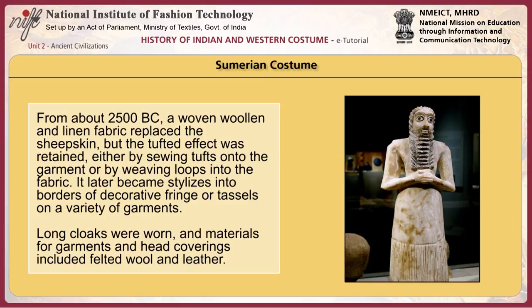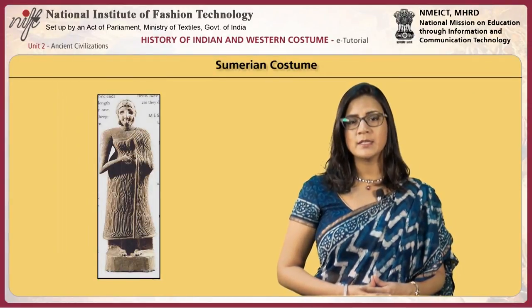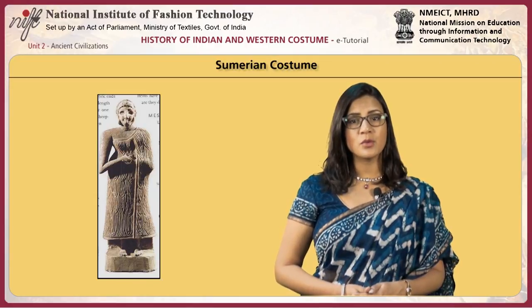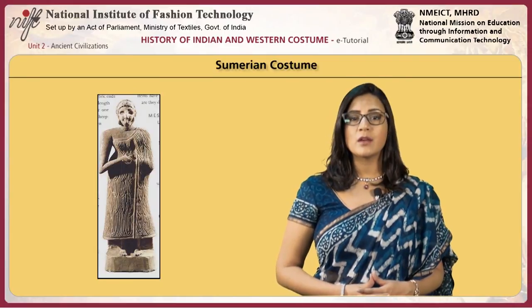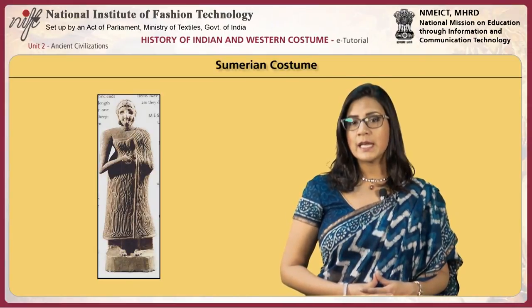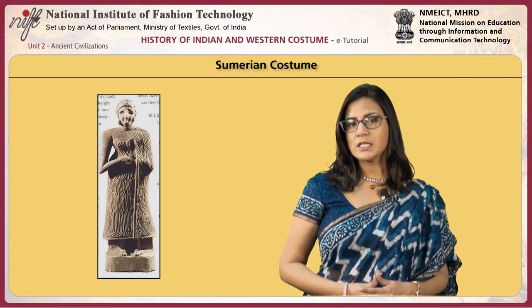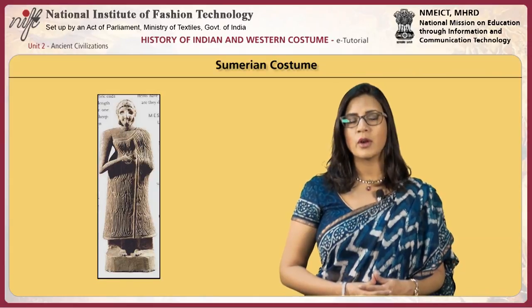Long cloaks were worn and materials for garments and head coverings included felted wool and leather. Sumerians wore a variety of headgear and jewelry. Civilian hats were round domed styles with the brim turned up, made of materials like woven fabrics, molded leather or felted wool. The caracul was tight with tiny curls styled into a pattern of wools all around the hat.